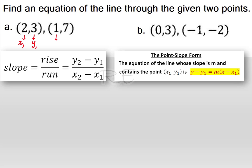If we choose (2,3) to be respectively x1, y1, and (1,7) to be x2, y2, then the slope m will be equal to 7 minus 3 divided by 1 minus 2.